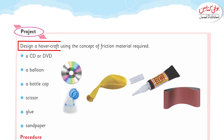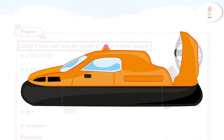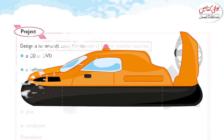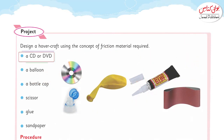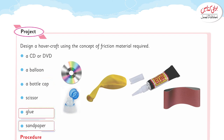Design a hovercraft using the concept of friction. Yahan bhi wo aap ko keh rahe hain ek hovercraft banao. Pehle main aap ko batata hoon hovercraft hota kya hai — a vehicle or craft that travels over land and water on a cushion of air provided by a downward blast. Iske liye aapko chahiye: a CD or DVD, a balloon, a bottle cap, scissors, glue, and sandpaper — in chhe ashya ki zaroorat hai.